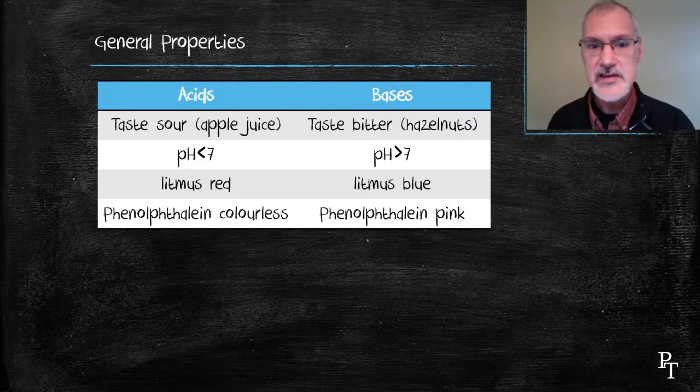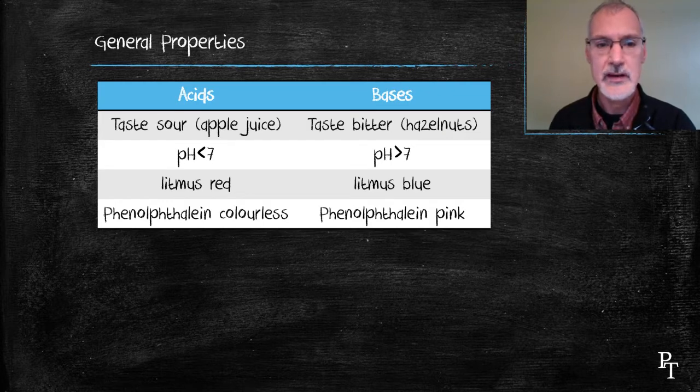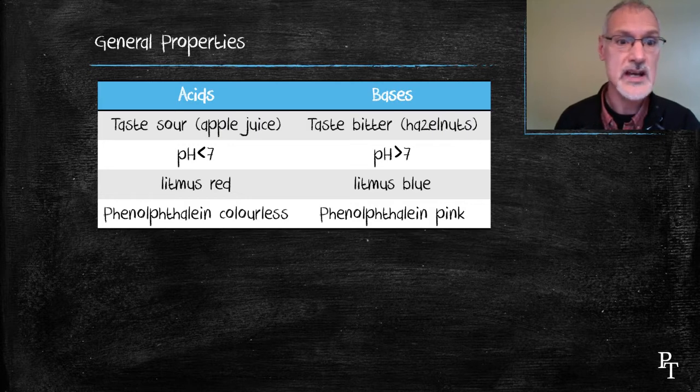First off, we can have a taste test, not perhaps the most scientific, but in the early days acids were based on their tastes, being sour and bases bitter. A more scientific method is to take a look at perhaps their pH value, a measure indirectly of their hydrogen ion concentration. Acids are classified as substances with a pH of less than 7 and bases a pH higher than 7.